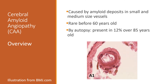Cerebral amyloid angiopathy overview. It is caused by amyloid deposits in small and medium-sized blood vessels. It is rare before 60 years old. By autopsy, it is present in about 12% of those over 85 years old.